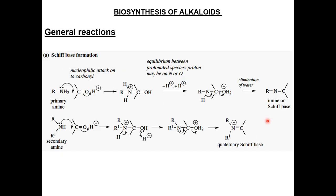The last category of the biosynthetic pathways is the biosynthesis of alkaloids. Alkaloids are a unique class of natural products characterized by the presence of nitrogen in their skeleton. A special group of reactions is involved, including Schiff base formation. The first general reaction in the biosynthesis of alkaloids is Schiff base formation, in which an amino group — generally from an amino acid — reacts with a carbonyl group to form a carbinolamine. The carbinolamine loses water and forms the Schiff base.